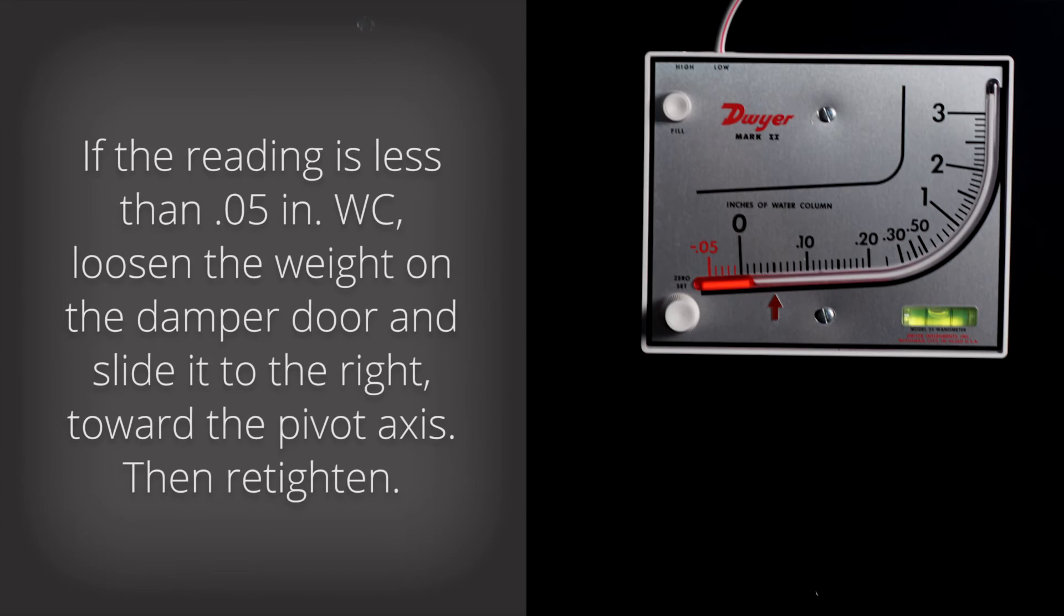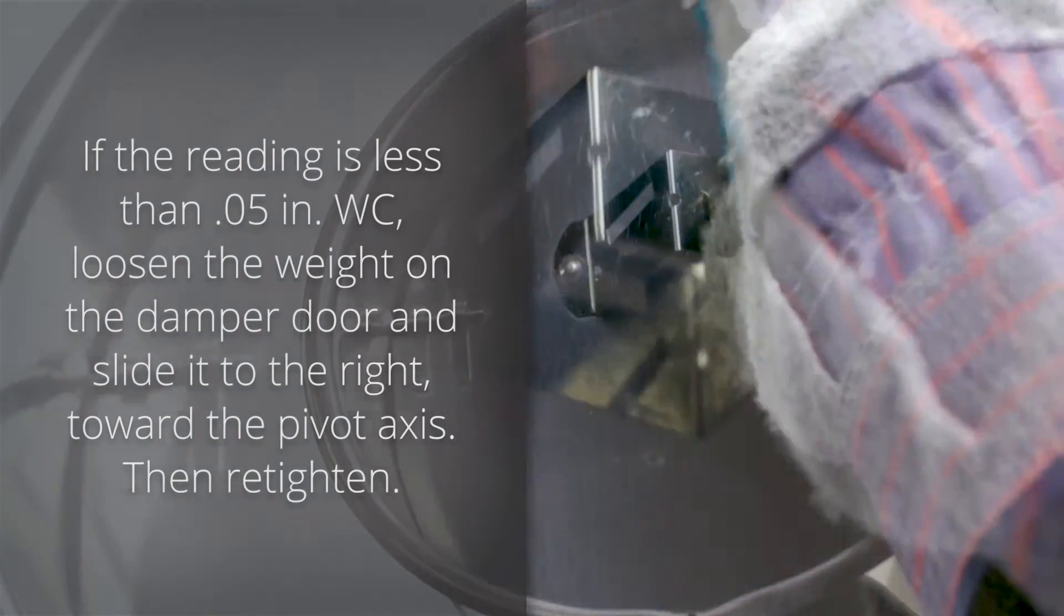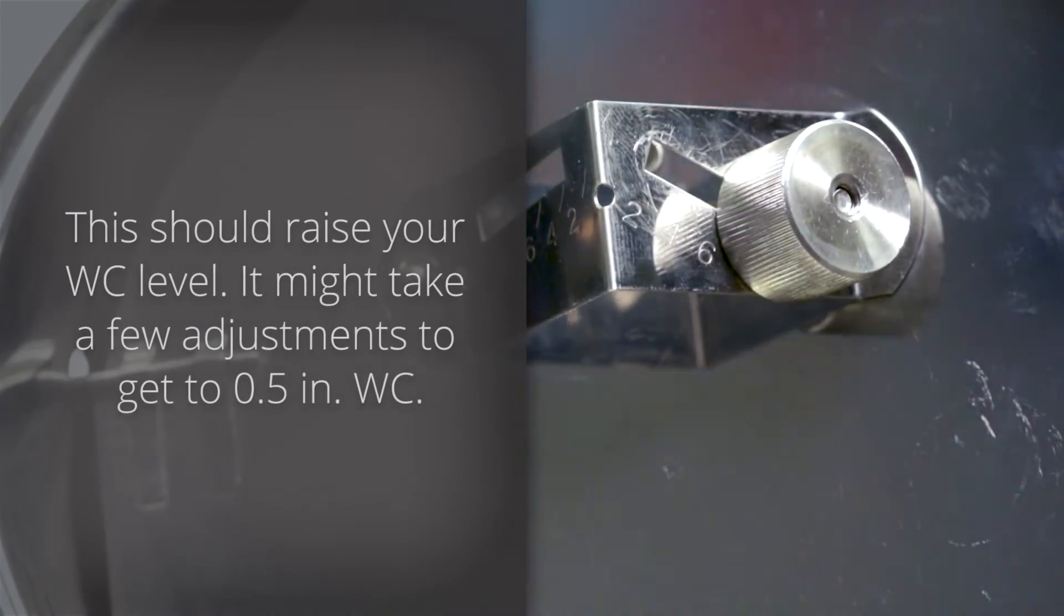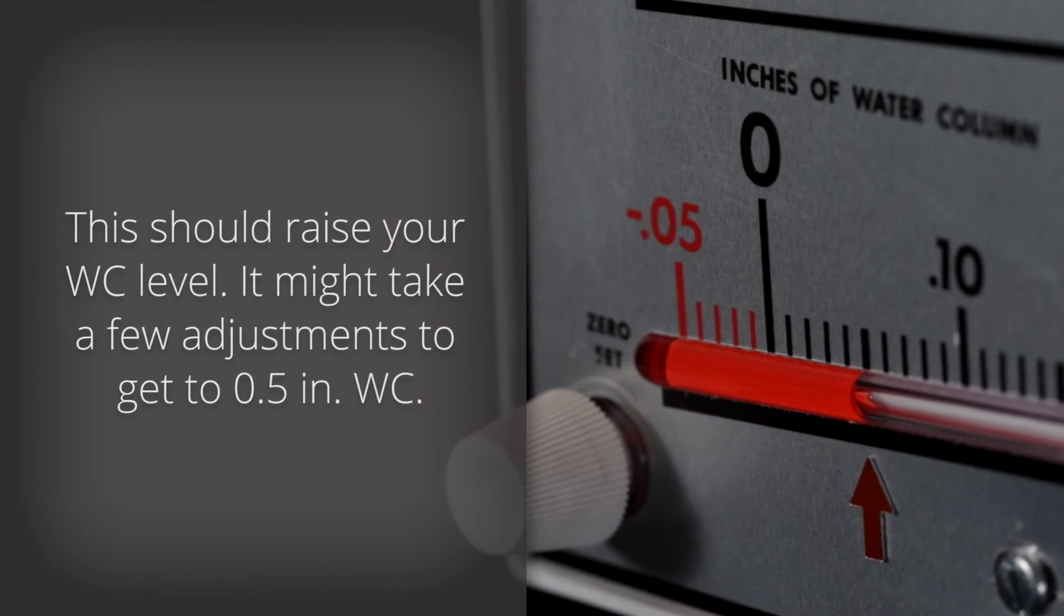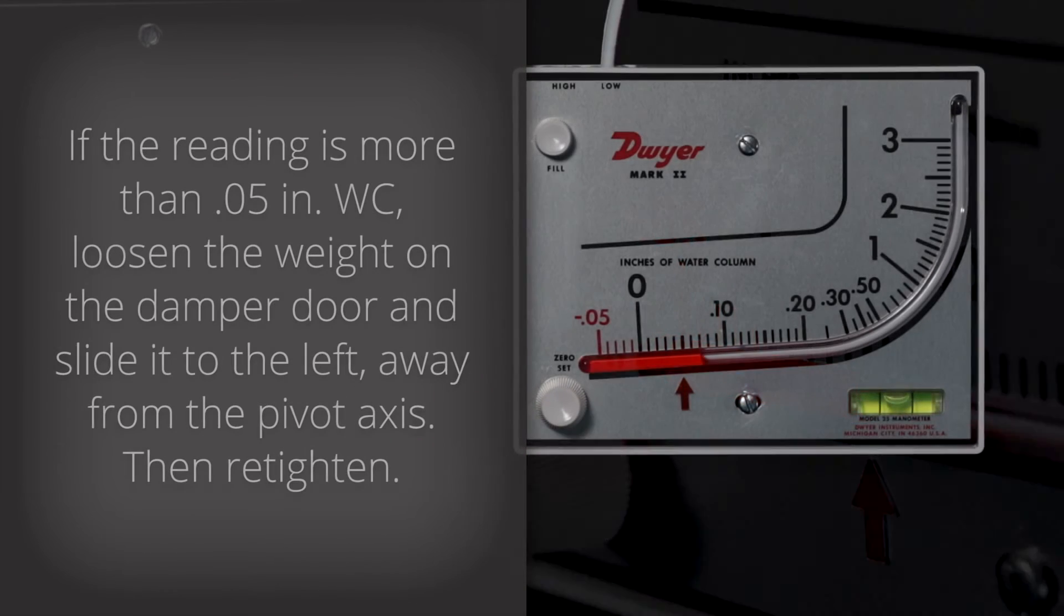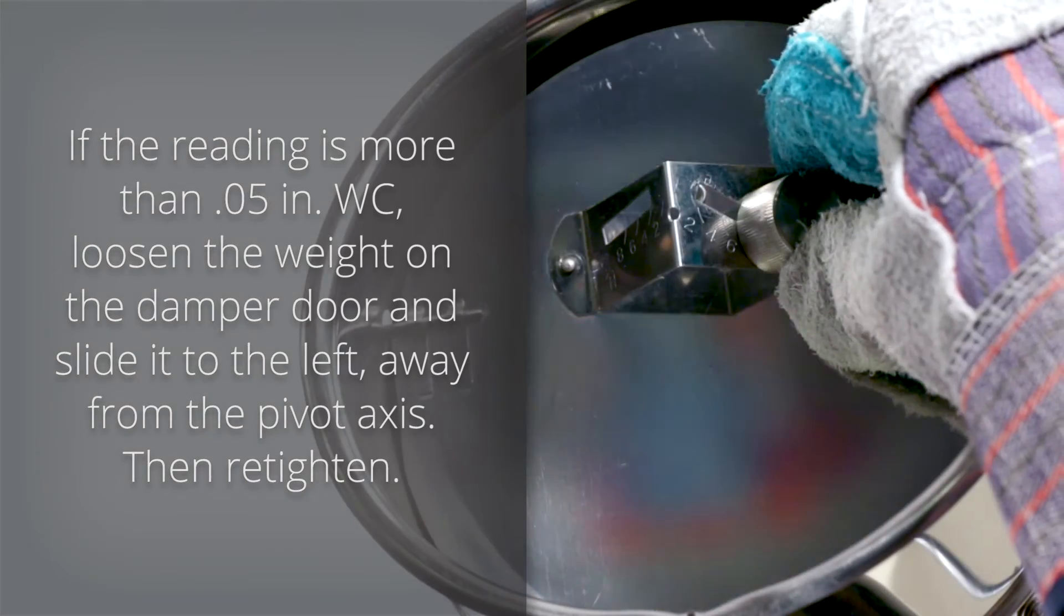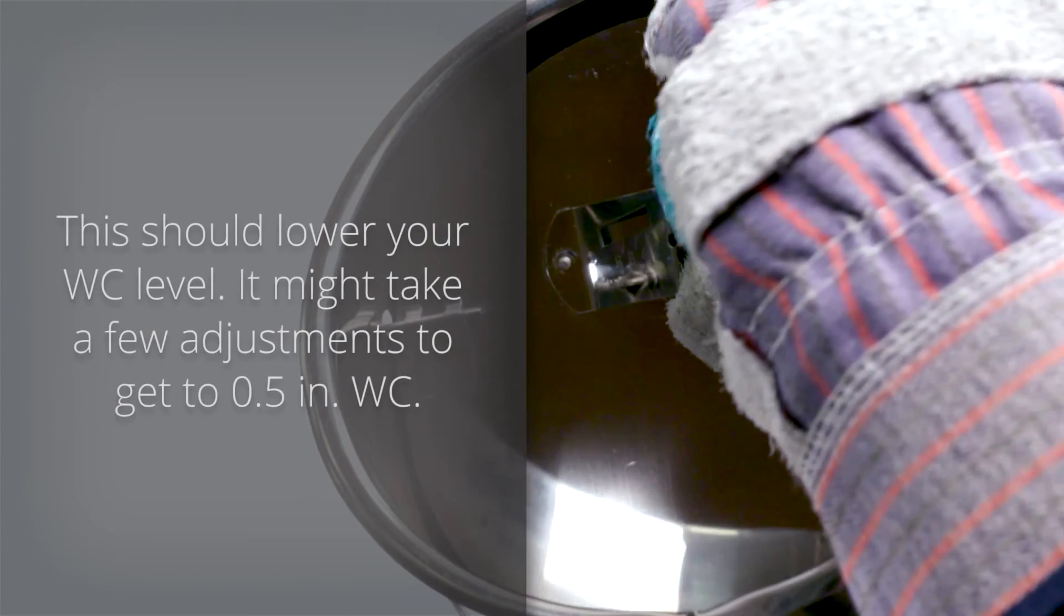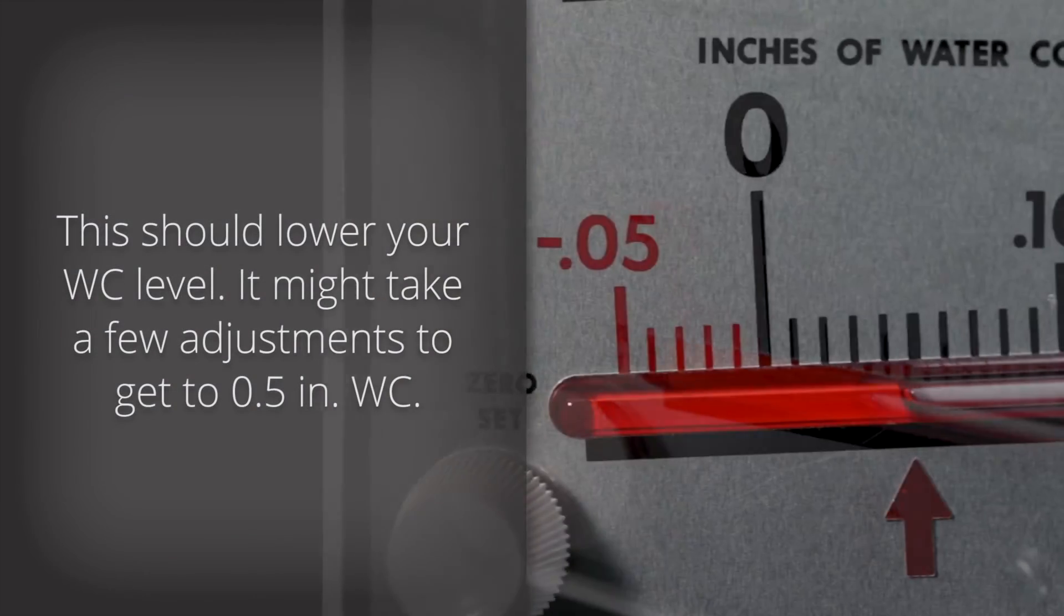If the water column reading is less than 0.05 inches of water column, loosen the weight on the damper door and slide it to the left, away from the pivot axis. Then re-tighten. This should lower your water column level. Again, it might take a few attempts to get to 0.05 inches.